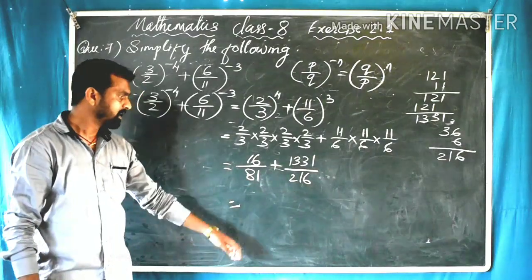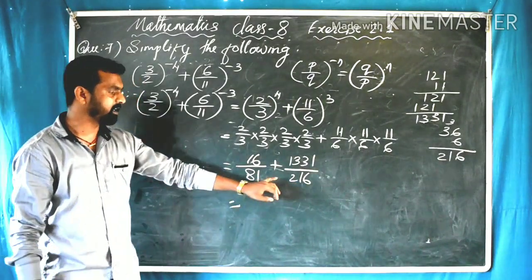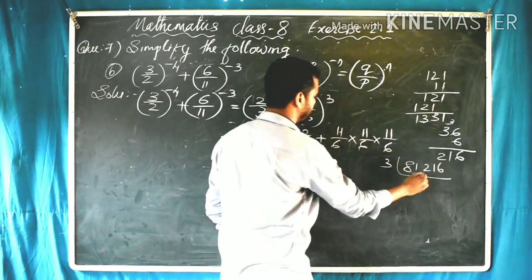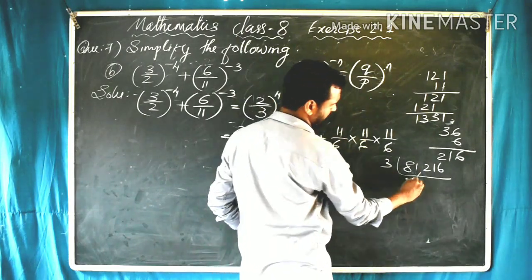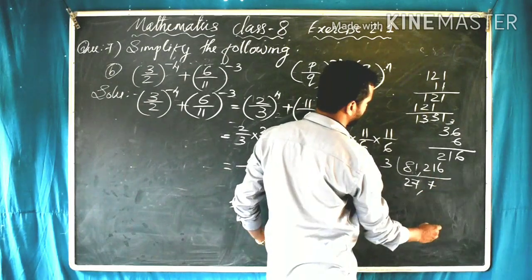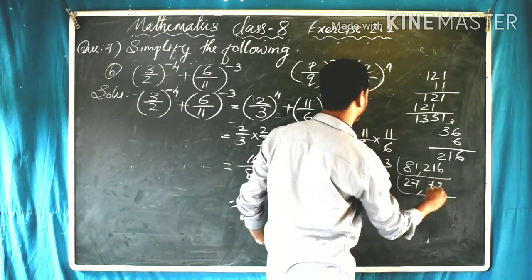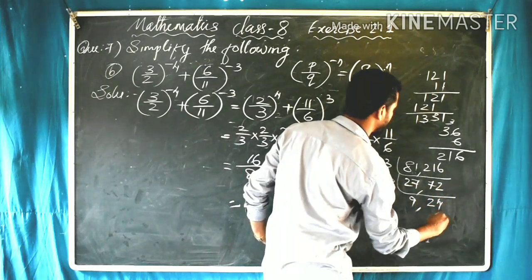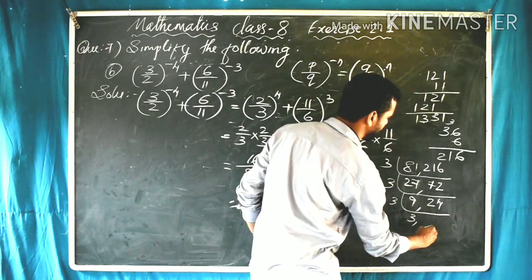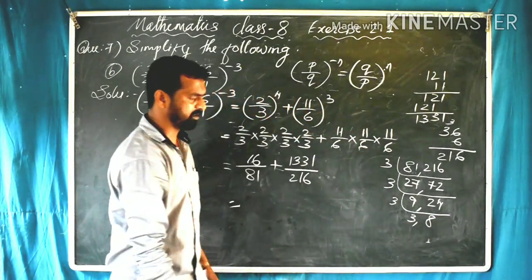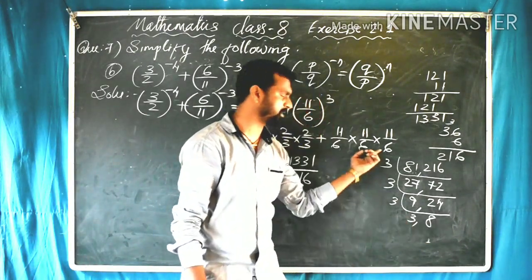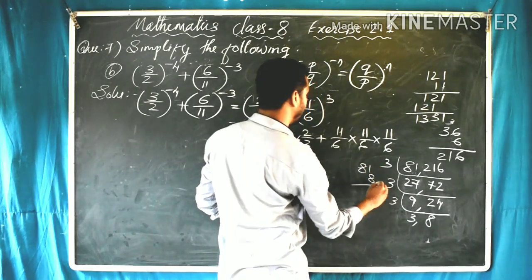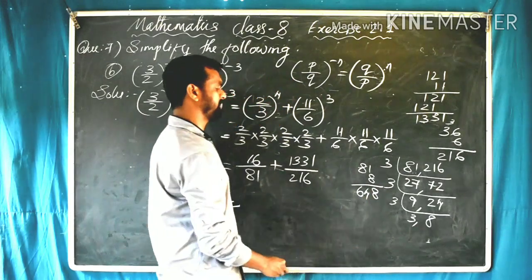The denominators are 81 and 216. To find their LCM, we divide by 3 repeatedly: 81 and 216 both divide by 3, then again by 3, and again by 3. After dividing out all common factors, we multiply the remaining factors together. The LCM of 81 and 216 is 648.